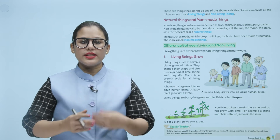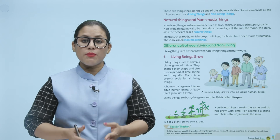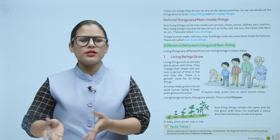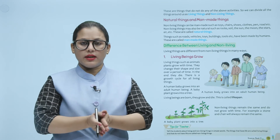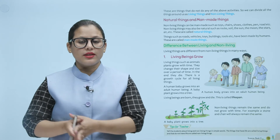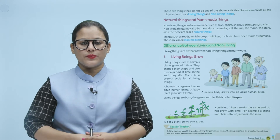Ab dekhen, living things hain, jaise ki animals hain ya plant, woh time ke saath grow karte hain. Inke shape and size bhi change hote hain over a period of time. Aur end mein they die. So, koi bhi living being hain, chahe wo human hain, chahe wo animal hain, chahe wo plant hain — woh born hote hain, grow hote hain, and then die. Aur isi ko kaha jaata hai life span.